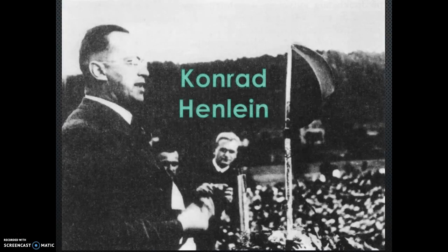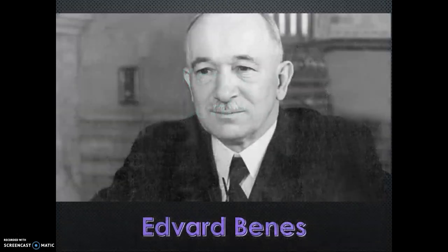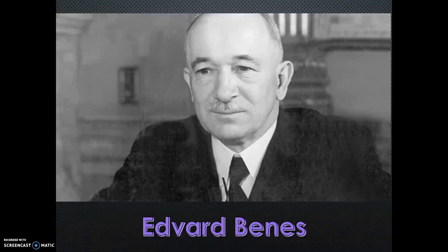In March of 1938, Konrad Henlein, who was head of the Sudeten German Party, met with Hitler and drafted a list of demands for the Czechoslovak government calling for Sudeten self-rule. President Edvard Beneš of Czechoslovakia was willing to give Sudeten Germans more rights. However, he didn't want to grant independence to them, lest other groups also call for independence and the Sudetenland break away as a whole.